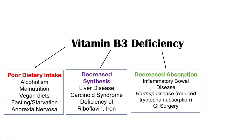A third category is decreased absorption. If vitamin B3 isn't absorbed from the small intestine, levels will be insufficient. Causes include inflammatory bowel disease — such as Crohn's — which causes intestinal inflammation and reduced vitamin absorption. Hartnup disease is an autosomal recessive condition that leads to reduced tryptophan absorption, decreasing the substrate available for hepatic synthesis. GI surgery involving removal of large portions of the gastrointestinal tract also reduces absorptive surface area.